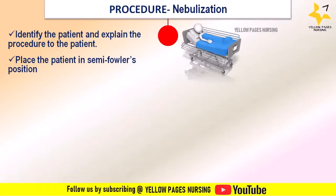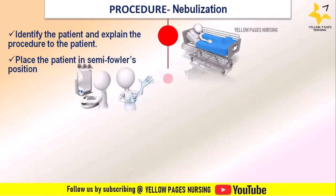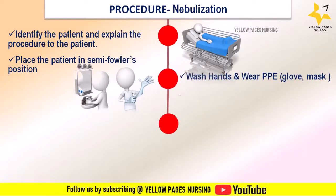Next, place the patient in semi-Fowler's position. This includes placing half the pillow beneath the shoulders and half beneath the head so that the head and neck are extended — diaphragmatic excursion and lung compliance are greater in this position. In simple terms, when placing the patient in semi-Fowler's position, the head should be extended facing upward and not facing the floor. Then wash hands and wear PPE — gloves, mask, etc.